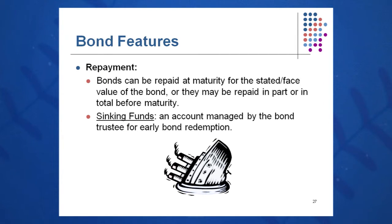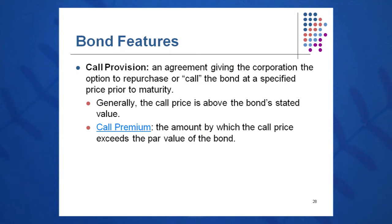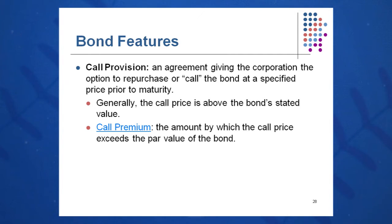Bonds can be repaid at maturity for the face value, and may be repaid in part or in total before maturity if they're callable. To this end, the CFO might set up a sinking fund — kind of a savings account that the trustee would manage to redeem the bond early. The CFO is essentially managing the debt-to-equity ratio. If they have a particularly good year cash-wise, they may elect to call in some of the bonds if the bond has a call provision, as indicated in the bond indenture.